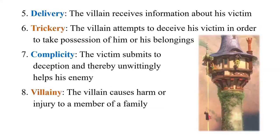Then the fifth one: Delivery. The villain receives information about his victim. For instance, Satan gets information — this guy is Adam, there is Eve, they are together. How should I approach? Eve or Adam? So delivery is about information about the victim. Or think of Aladdin — some magician comes in the form of Aladdin's uncle, because he gets the information that his real uncle is living somewhere far away.